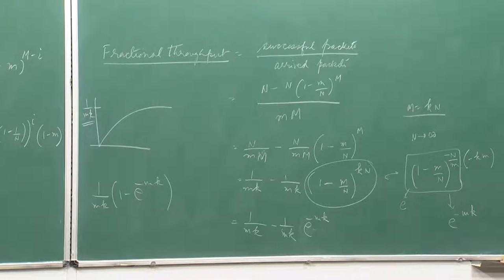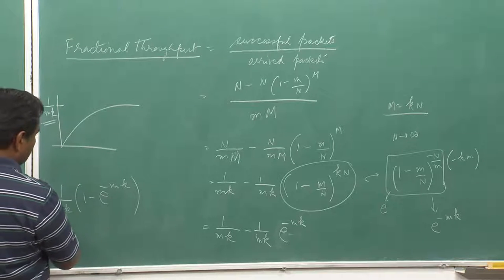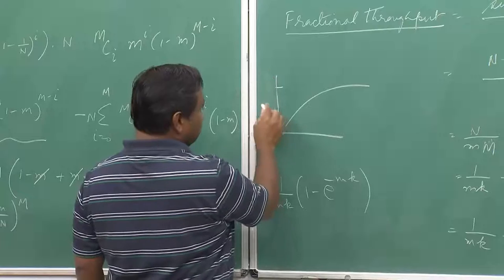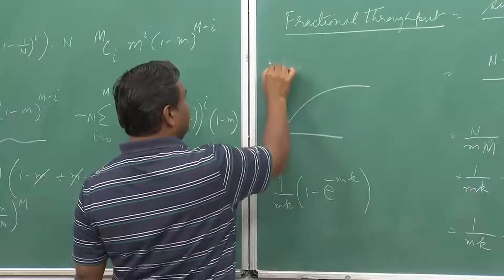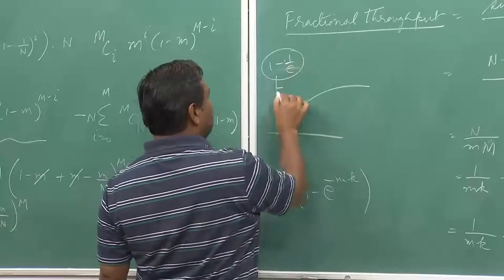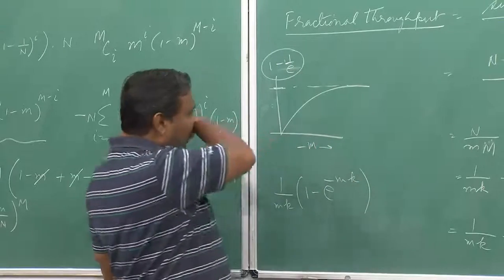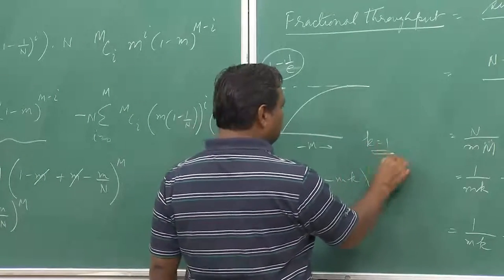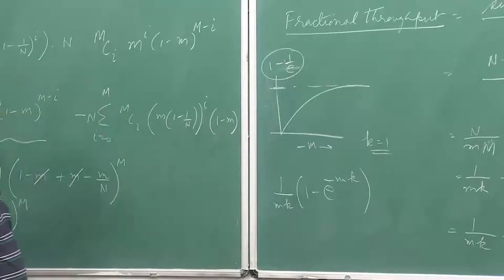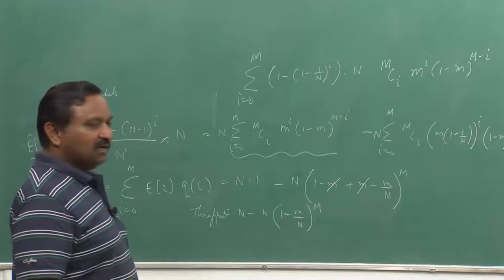Now let us look at the delta network. For a delta network we need to do a recursive computation to find the throughput, and then we can plot and compare how it compares with the crossbar. When m equals 1, k equals 1, the maximum value is 1 minus 1/e, which is the maximum throughput for a large crossbar.